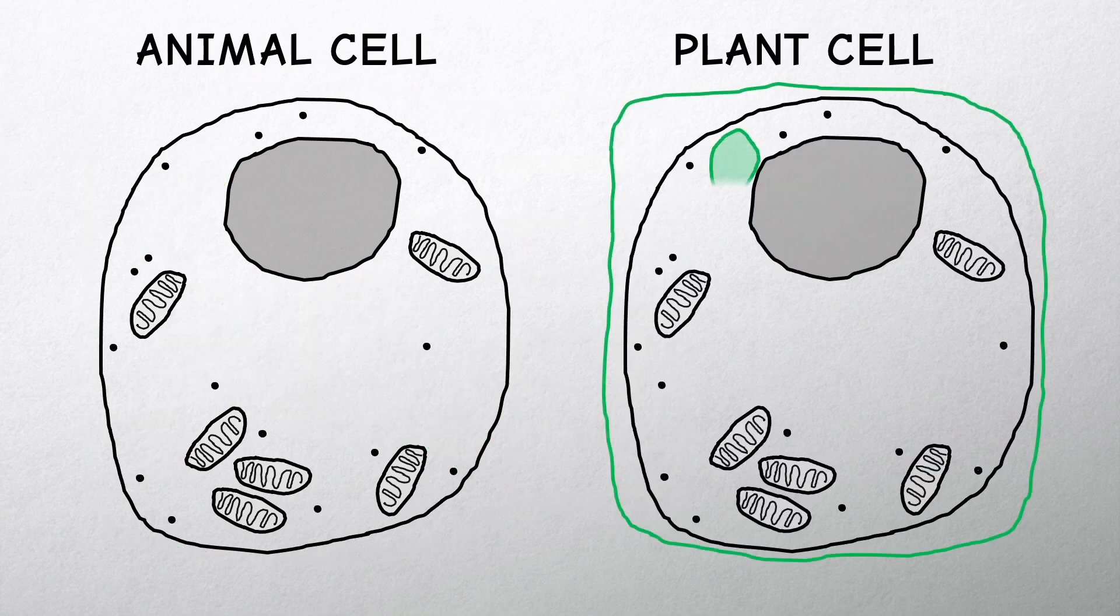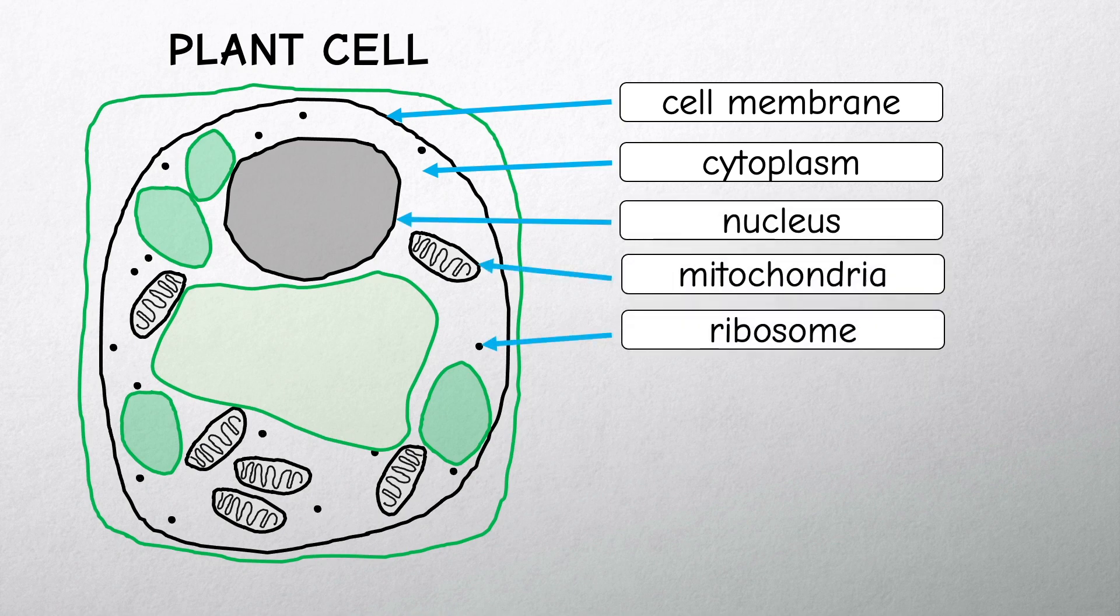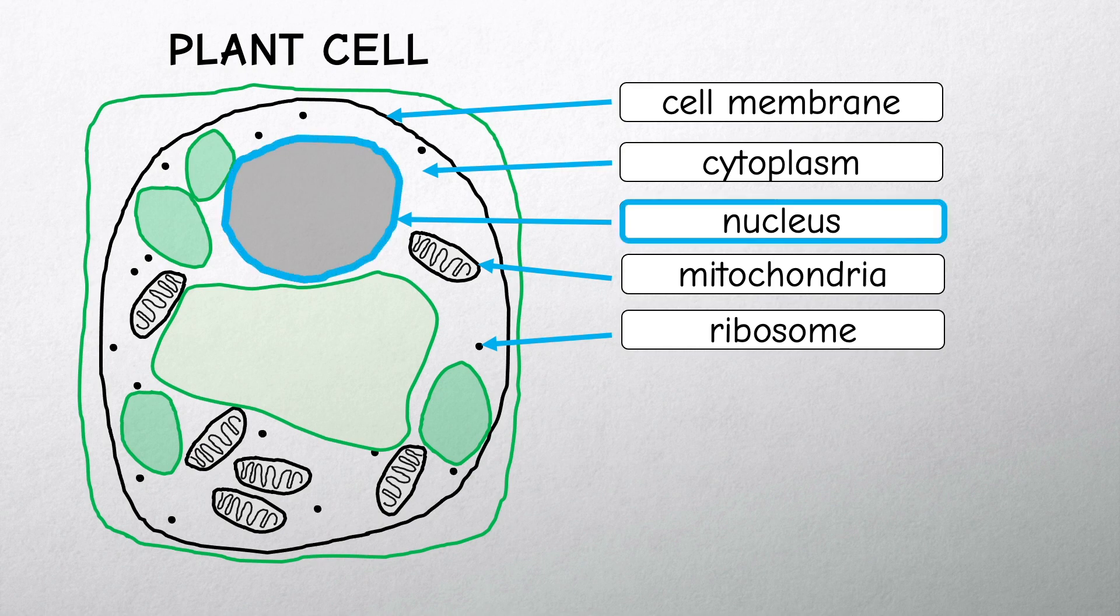Plant cells are similar to animal cells. They have a cell membrane, cytoplasm, a nucleus, mitochondria, and ribosomes. Plant cells are eukaryotes because they have a nucleus surrounded by a membrane.